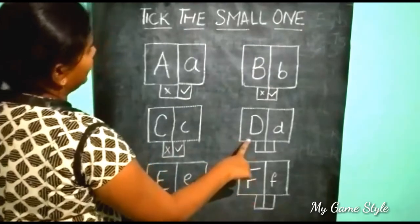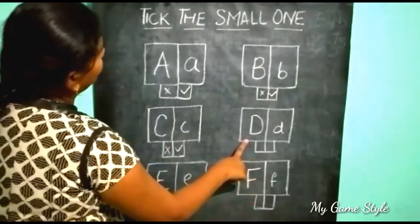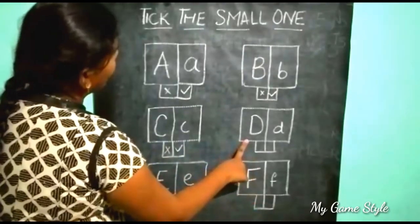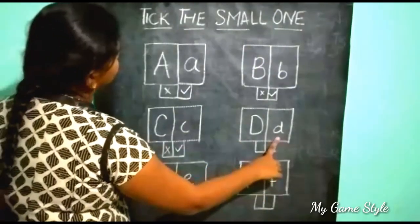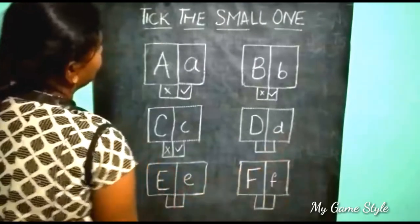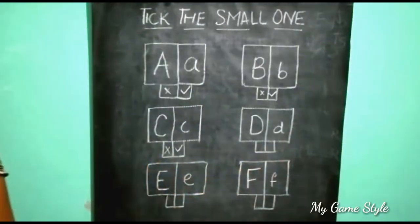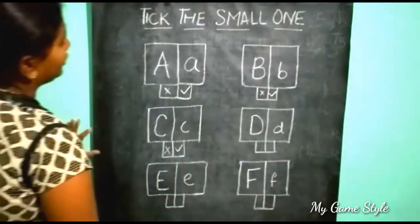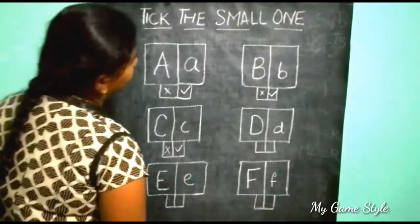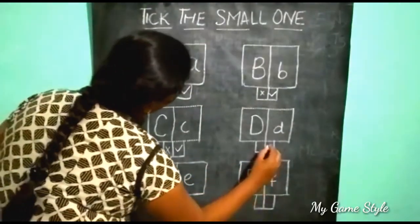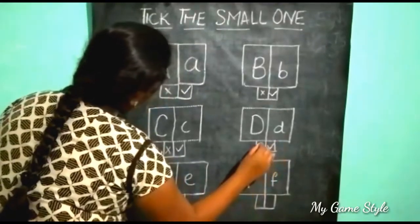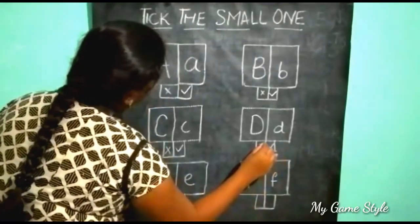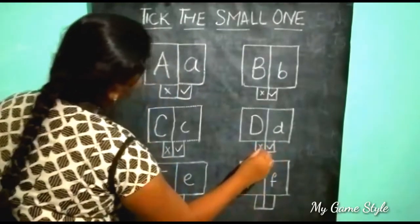Here, this is a big one and this is a small one. So we need to tick the small one. This is wrong.